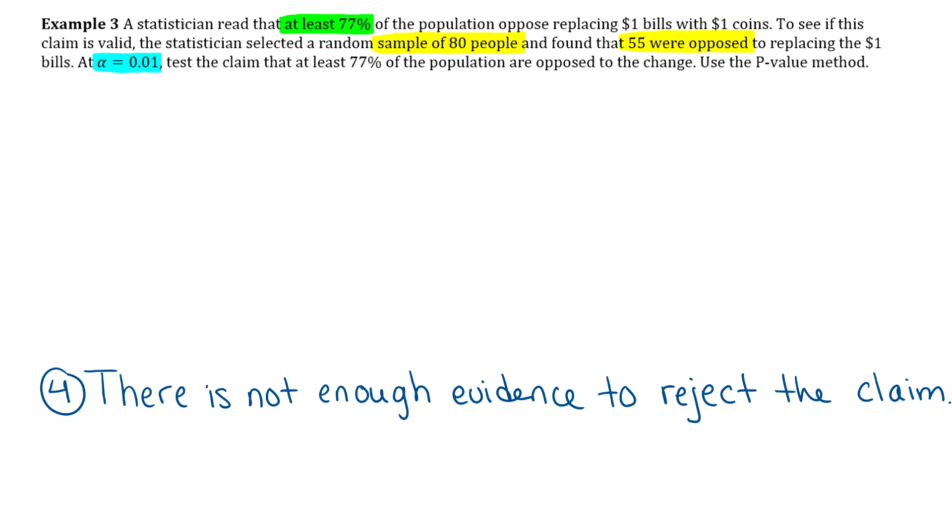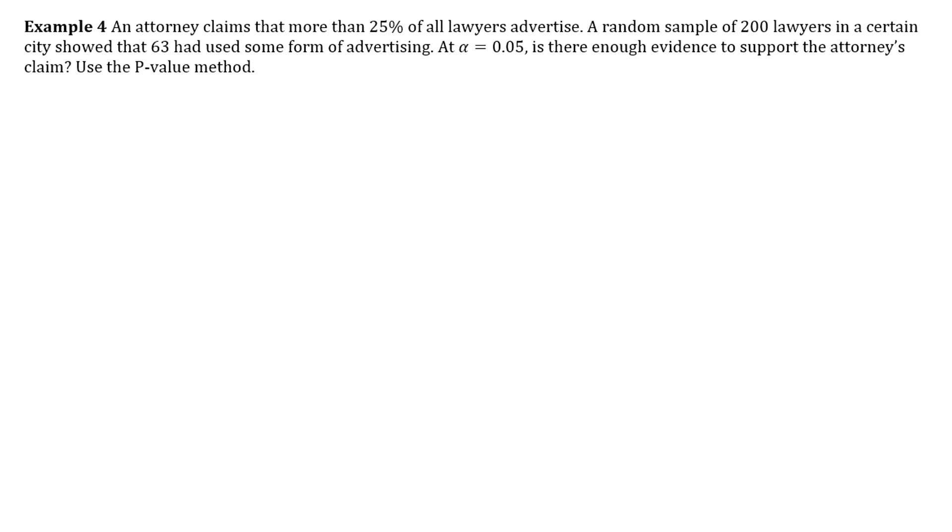Okay, so we'll do one more example. So example four says, an attorney claims that more than 25% of all lawyers advertise. A random sample of 200 lawyers in a certain city showed that 63 had used some form of advertising. Alpha is 0.05. Is there enough evidence to support the attorney's claim? Use the p value method.